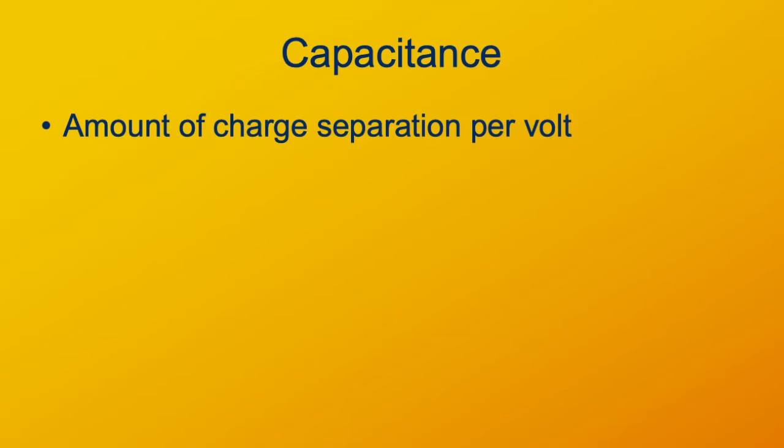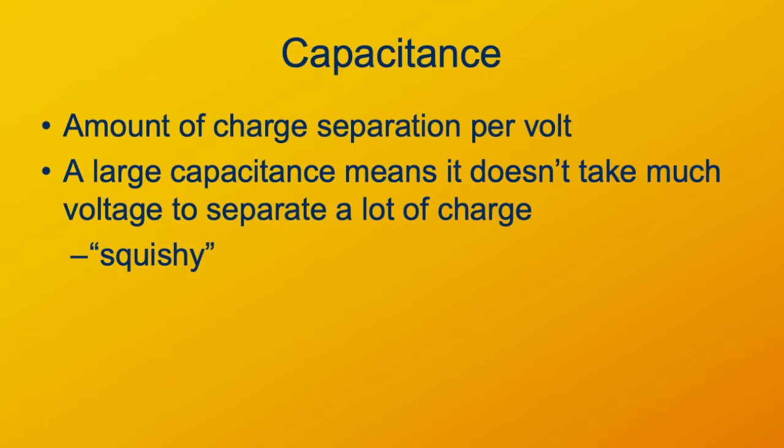So capacitance is the amount of charge separation per volt. A large capacitance means that you can separate a lot of charge on the plates of the capacitor without requiring a whole lot of voltage. I think of that as being a squishy capacitor that a little bit of voltage pushes a lot of charge separation onto the plates.